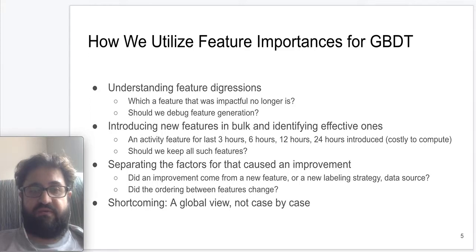One shortcoming for feature importances is that they only give a global view of the model, hence are in general not as useful in understanding the ranking for a specific singular search instance.